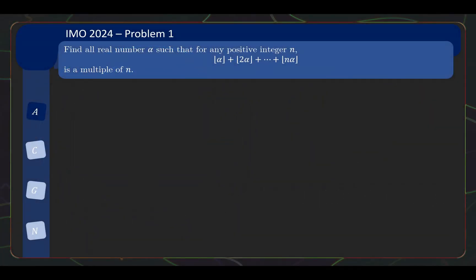So problem 1 is an algebra problem, though some may argue that there's an element of number theory in it. Here's the problem statement: Find all real number alpha, such that for any positive integer n, floor of alpha plus floor of 2 alpha plus floor of n alpha is a multiple of n.